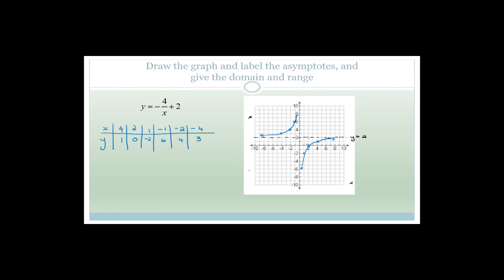Now you can see, therefore, what are your asymptotes? Your asymptotes are obviously the y equals two line and the x-axis. So the domain: the only value this does not exist for is the y-axis, which is x equals zero. So the domain is x is an element of real values for x does not equal zero. The range is a similar thing — y is an element of real values, except for the asymptote where y equals two. So y cannot equal two for this graph.